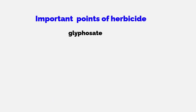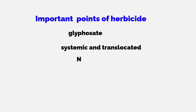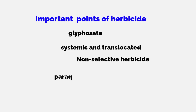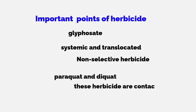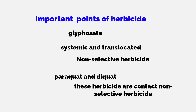Glyphosate is a systemic and translocated herbicide but is non-selective, meaning it can kill all vegetative parts wherever it is spread. Paraquat and diquat are both contact non-selective herbicides. Being non-systemic, these herbicides will only kill the portion of the weed that they come in direct contact with.